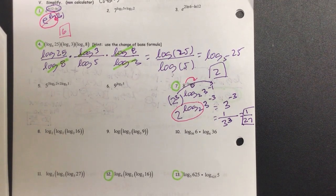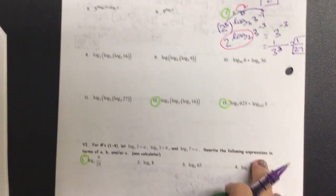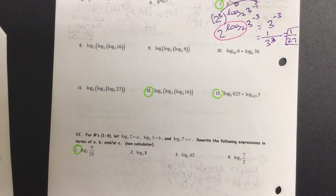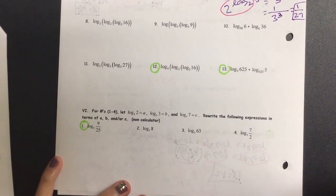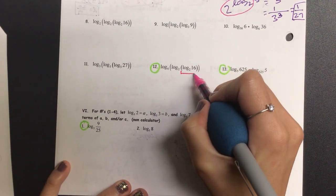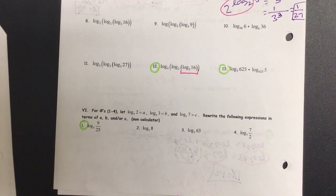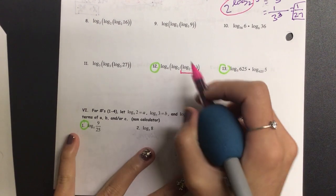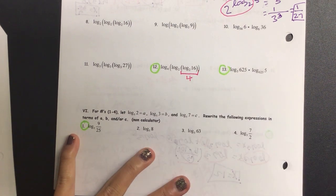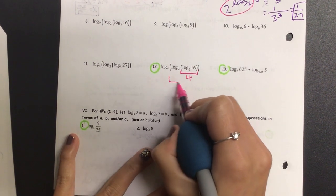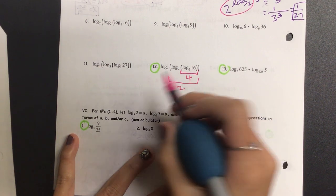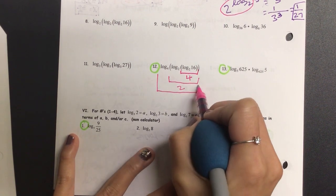Okay, let's go to number 12. So on number 12, we have 3 logs within each other, meaning we have composition, meaning we have to start from the inside. So let's go ahead and bracket the first part. 2 to the power of something is 16. What is that something? 4. Now let's go to the next bracket. 2 to the power of something is 4. What is that something? 2.